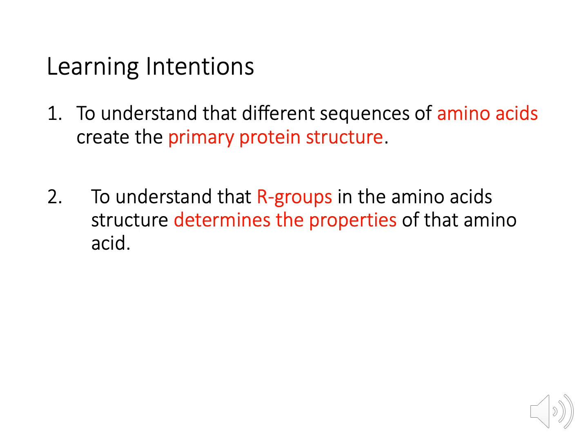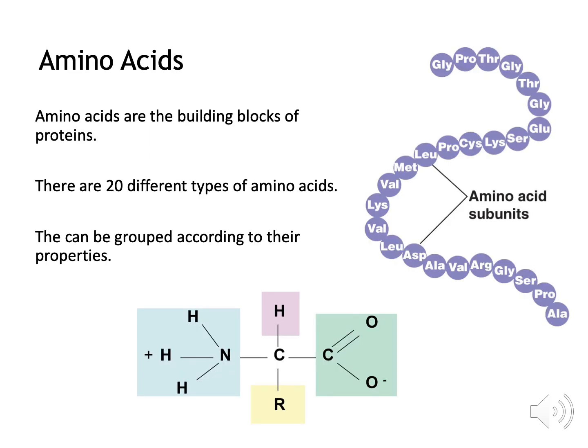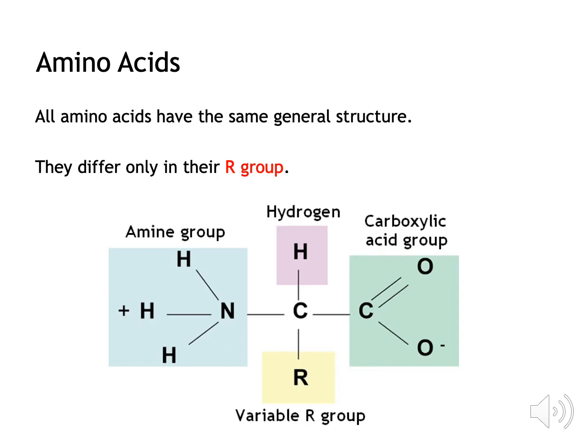We have looked at learning intention 1, to understand that different sequences of amino acids create the primary protein structure. We are now going to look at number 2, to understand that R-groups in the amino acid structure determine the properties of that amino acid. Amino acids are the monomers that build up to create proteins. All amino acids have the same general chemical composition: a central carbon atom with four groups bonded to it — an amine group, a hydrogen atom, a carboxylic acid group, and a group known as an R-group. The R-group is the only one that changes, and it is what makes each amino acid different and classifies it into its specific group.